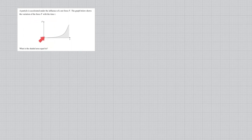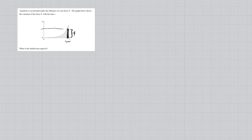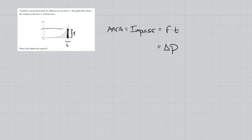A related question: a particle is accelerated under a net force, and the graph shows force varying with time — in this case the net force is drastically increasing. What does the shaded area equal? Again, the shaded area represents force times time, which is the impulse, and that equals the change in momentum. It doesn't necessarily tell us the total momentum, but how much the momentum changes. If the object starts with zero momentum, the change equals the final momentum as well.